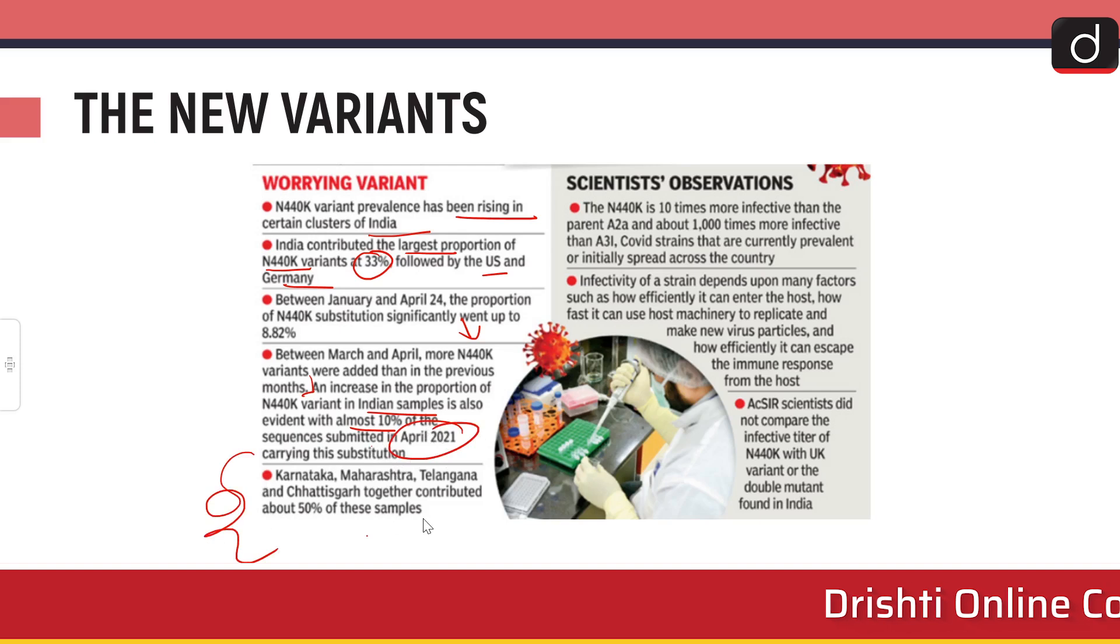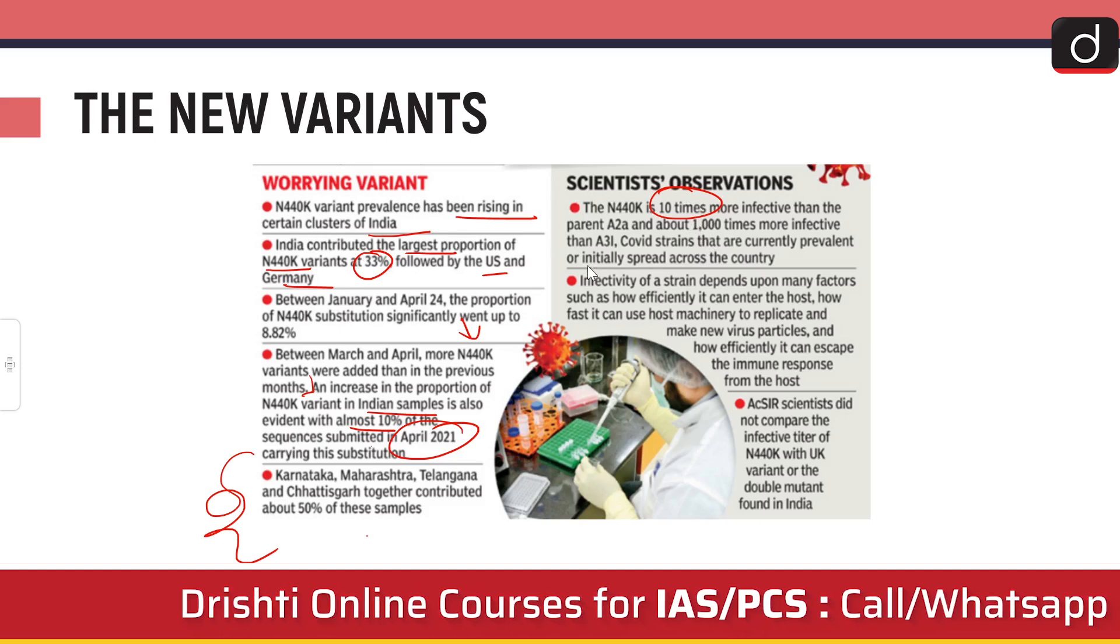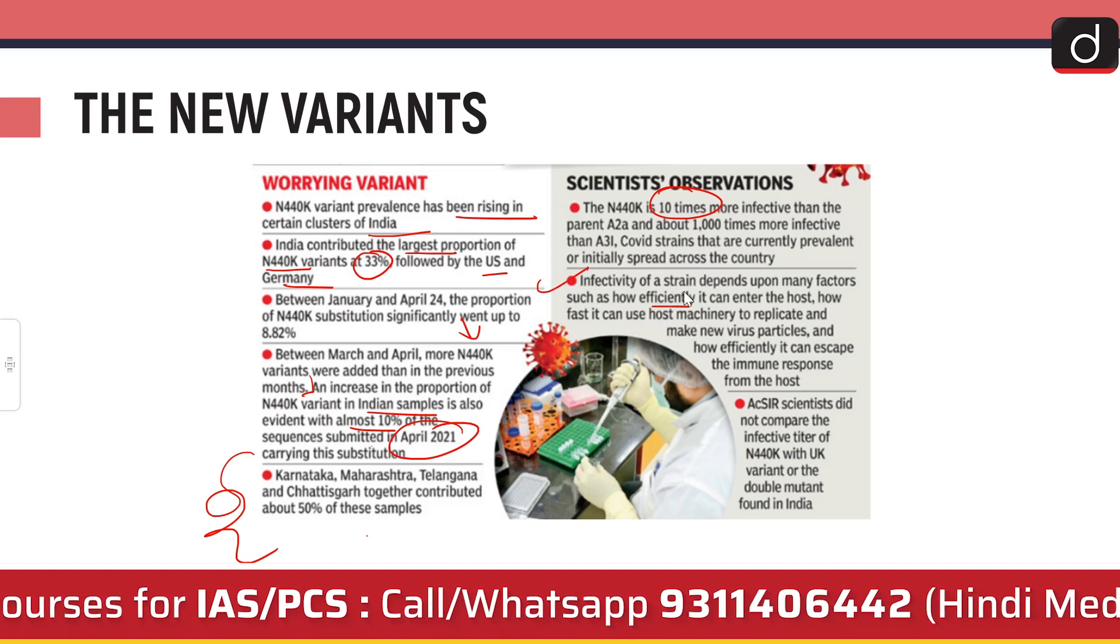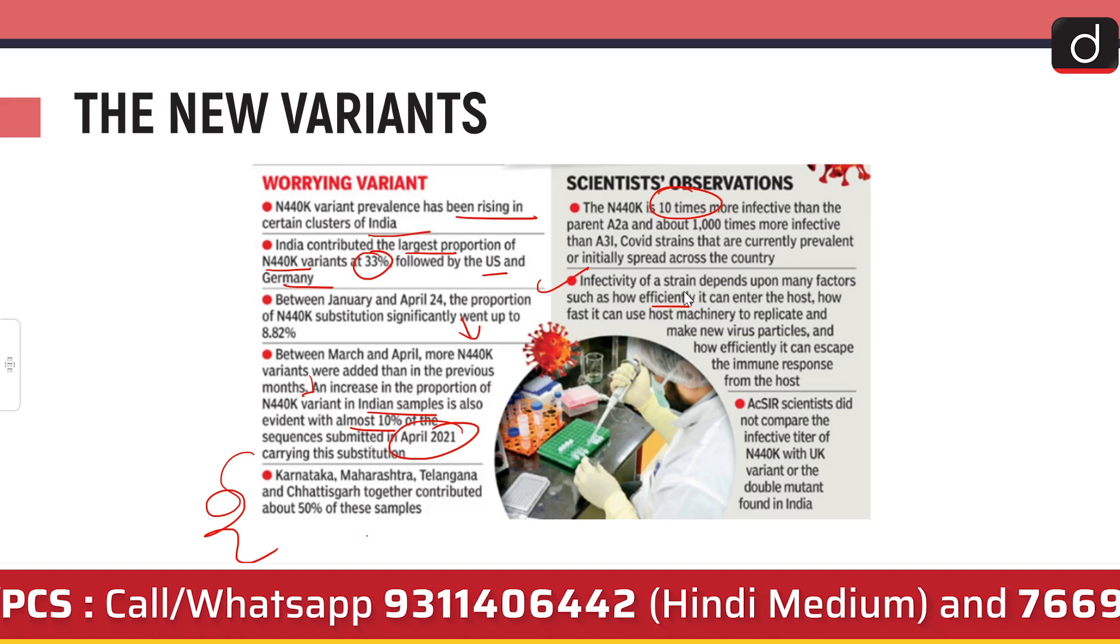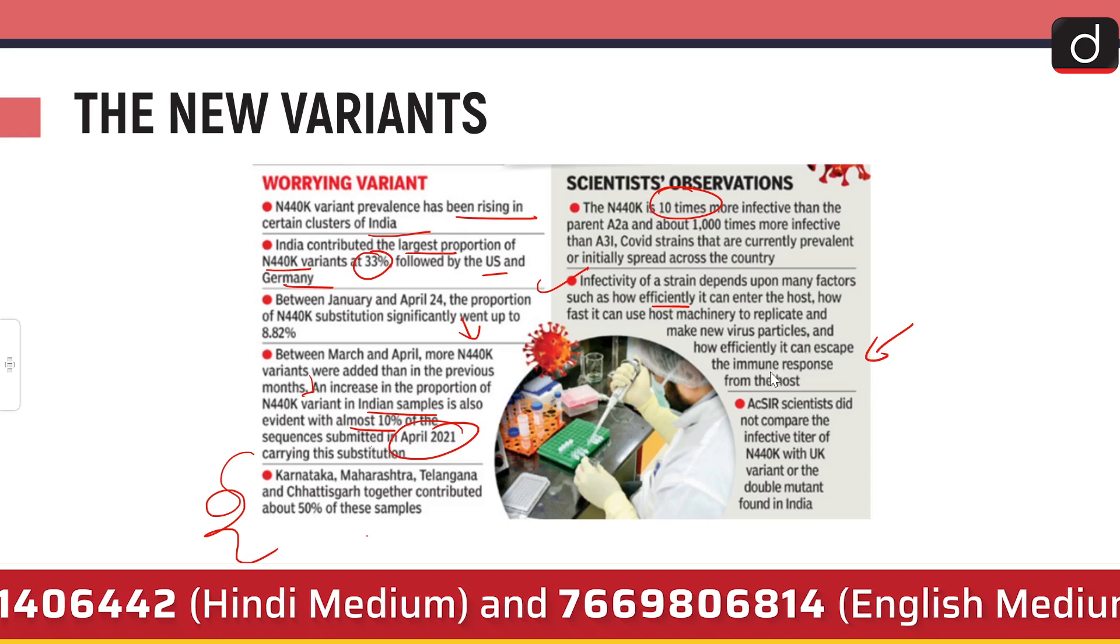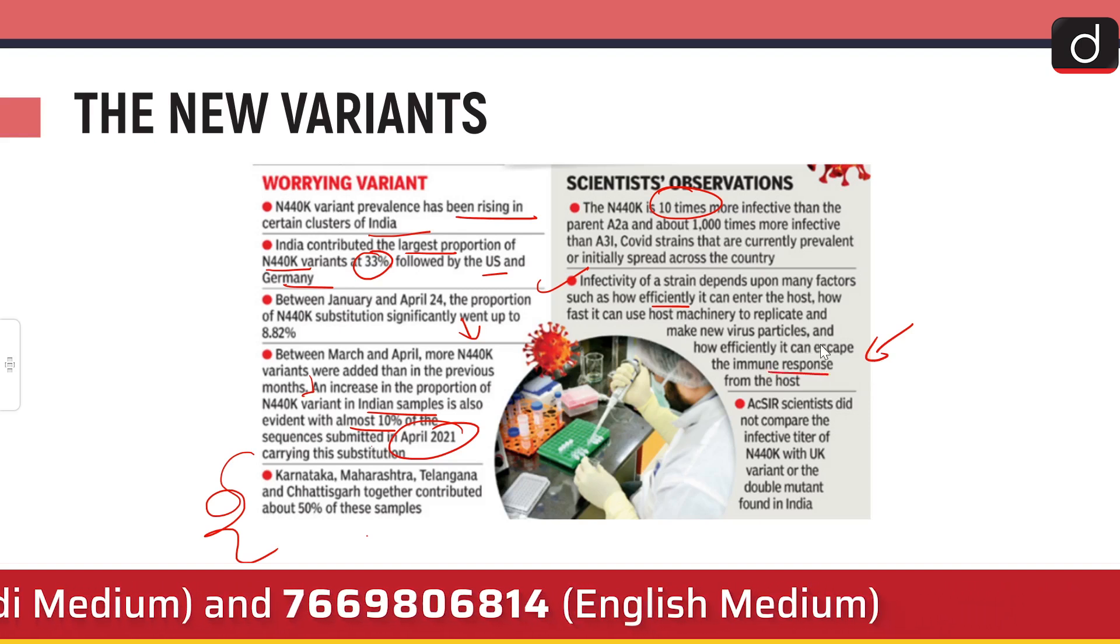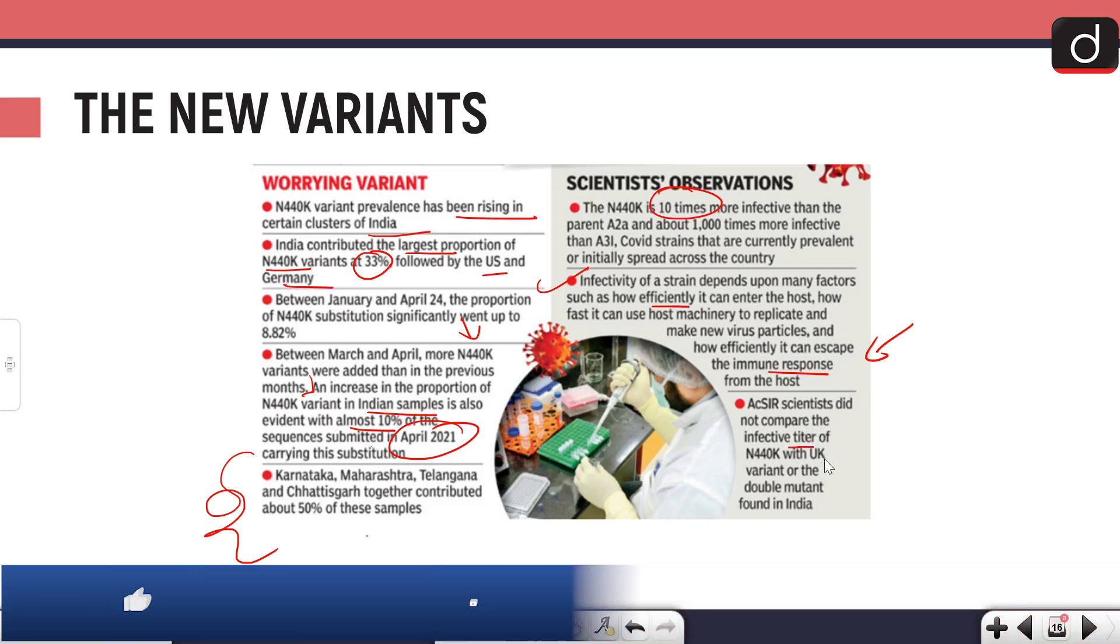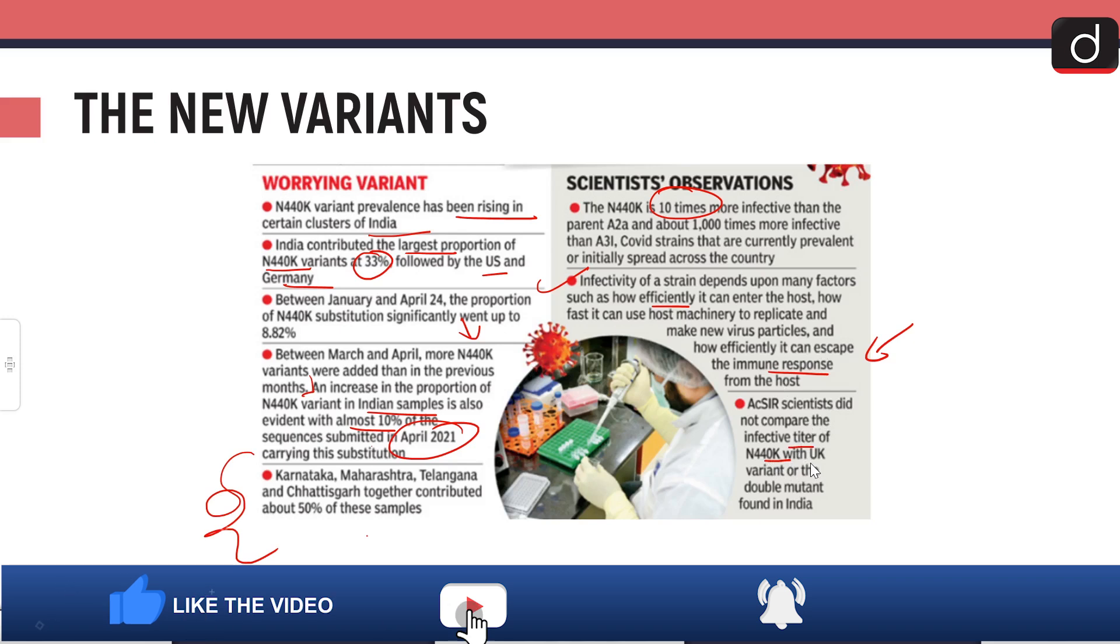It's 10 times more infectious - both of these super infective viruses. Infectivity of a strain depends upon many factors such as how efficiently it can enter the host, how fast it can use the host machinery to replicate itself, and how efficiently it can escape the immune response. It will bypass your immune response - your immunity system will not even know that you have a virus inside your body. The scientists did not compare the infective titer of N440K with the UK variant or the double mutant found in India.